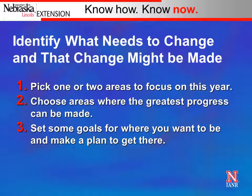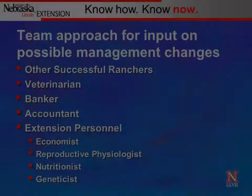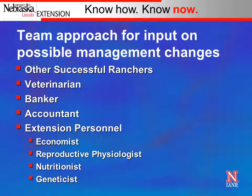Once you've benchmarked your ranch, pick one or two areas to focus on each year, looking where you see the greatest opportunity. For example, if you're spending $100–$150 on harvested feed and can reduce that by 20%, that's significant. If you're spending $20 on vaccines and reduce by 20%, you save only $4 — not as impactful. Set goals for where you want to go and make a plan. There's also tremendous value in developing a consultant team — invite successful ranchers, your veterinarian, banker, accountant, or extension personnel to give input and a fresh perspective on your operation.